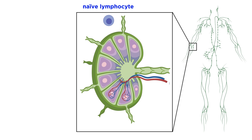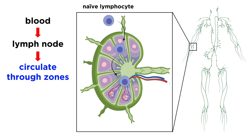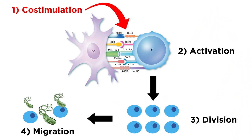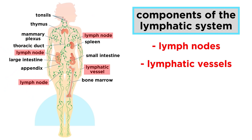Naive lymphocytes, meaning B and T-cells that haven't been activated yet, drain from the blood into the lymph nodes, where they circulate through their respective zones, engaging in a sort of cellular speed dating, looking for cells presenting their cognate antigen. If they don't find it, they move from lymph node to lymph node, and eventually circle back to the bloodstream. If they do find it, and receive the proper co-stimulation, the lymphocyte becomes activated, divides rapidly, and migrates to the site of trouble to fight the threat.